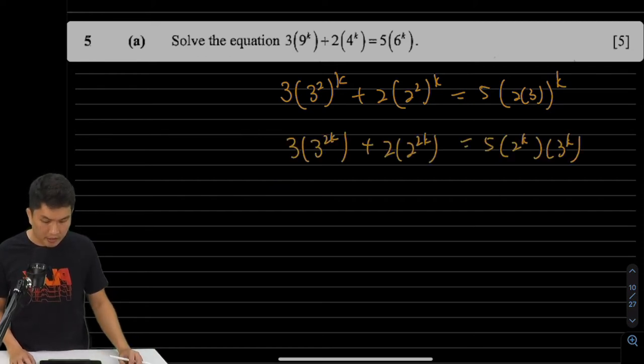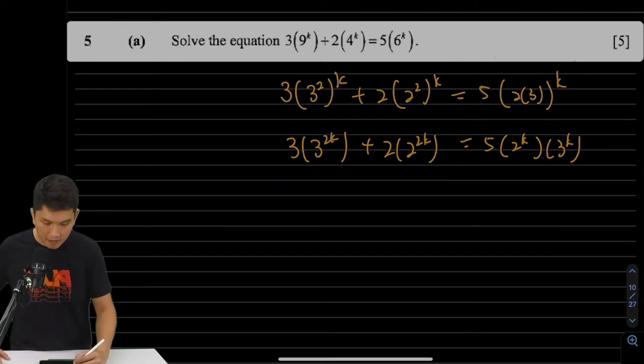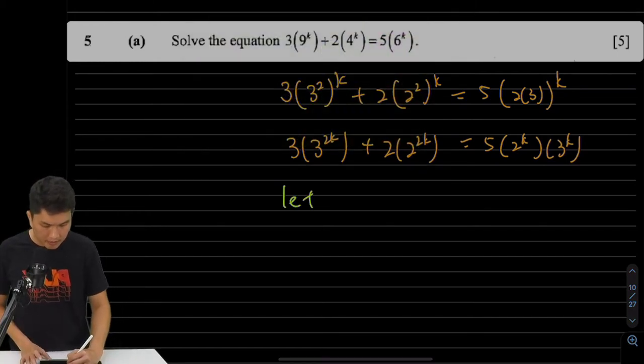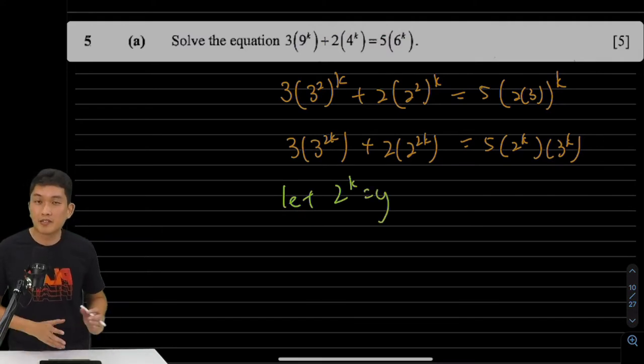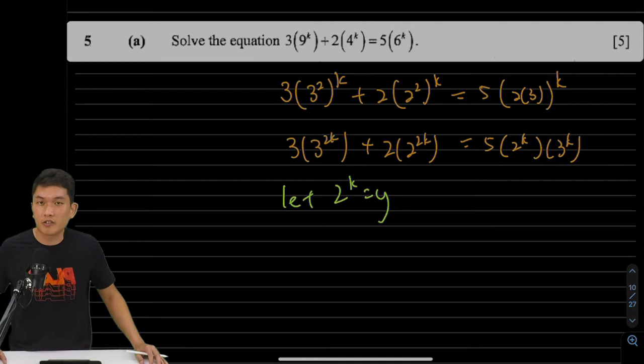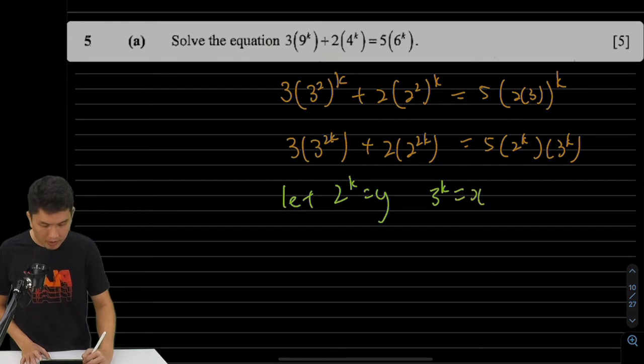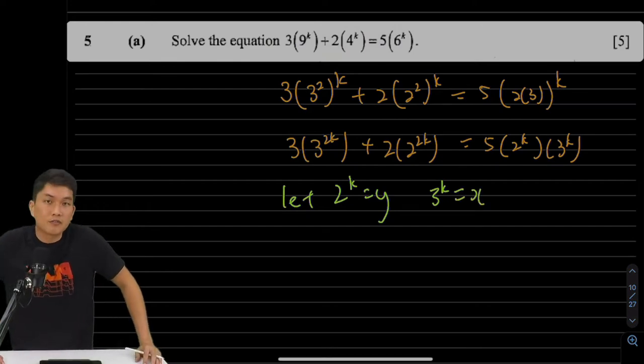So this will look like your next step. And this is where most students get stuck because they will say something like, let 2 to the power of k equals to y. And then hopefully we can substitute everything and then solve a quadratic equation from here or a linear equation sometimes. But the problem is I also have 3 to the power of k. And if I let it equal to x, then I have two unknowns and that makes it very hard to solve.